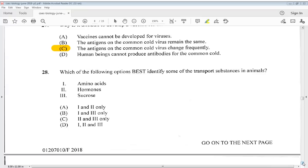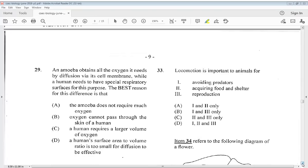Let's go to 28. Which of the following options best identify some of the transport substances in animals? Amino acids, hormones, sucrose. What would be your answer for 28? It would be A, 1 and 2 only. Let's go to 29. An amoeba obtains all the oxygen it needs by diffusion via its cell membrane while a human needs to have special respiratory surfaces for this purpose. The best reason for this difference is that a human's surface area to volume ratio is too small for diffusion to be effective. So we know it would be D.